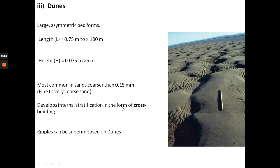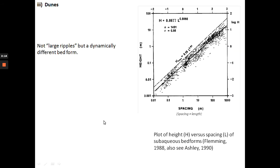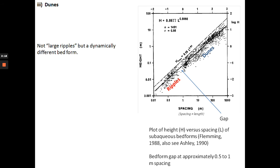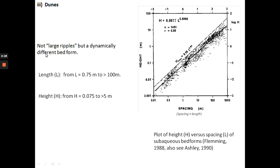Dunes also develop internal cross stratification, but we call the internal strata cross bedding rather than cross lamination. Ripples can be superimposed on dunes. Dunes are larger compared to ripples but the shape is very similar — they have a crest, a brink, a stoss, and a lee. You can determine current flow direction by looking at the dip direction of the lee slope. But dunes are not just large ripples — they are a dynamically different bedform. To demonstrate this, we have a plot by Fleming 1988, and you should also read the paper by Ashley, which reviews the terminology for flow-transverse bedforms.